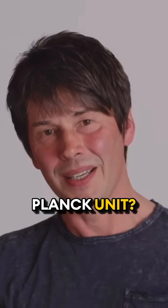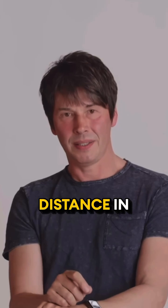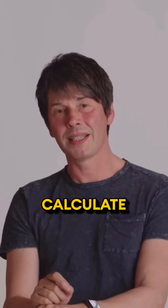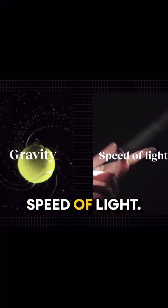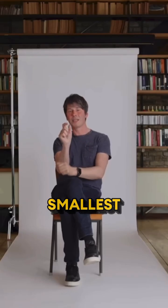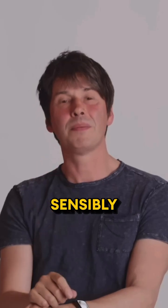What's a Planck unit? It's a fundamental distance in the universe that you can calculate by putting together things like the strength of gravity, Planck's constant, and speed of light. It's the smallest distance that we can talk about sensibly in physics as we understand it.